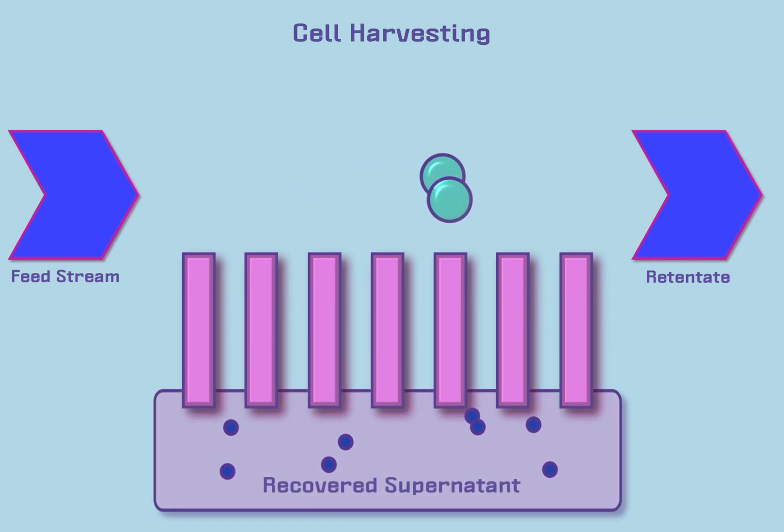This process also can be used to selectively recover the supernatant. In this situation, the product of interest would be in the fraction that passes through the membrane and is separated from the cells.